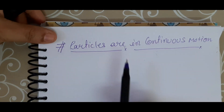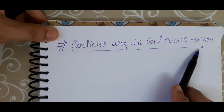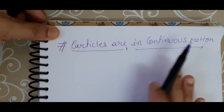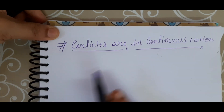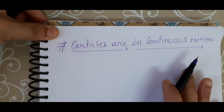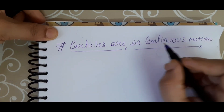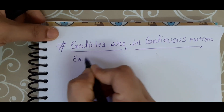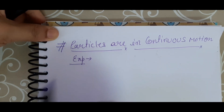Now we will study the second characteristic. The second characteristic, students, is that particles are in continuous motion. Particles are continuously moving in any matter. For this, we perform two experiments. The first experiment involves smoke.